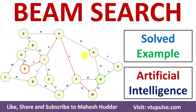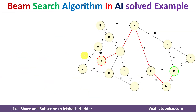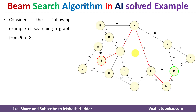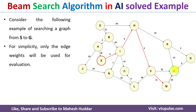Welcome back. In this video I will discuss how to use the beam search algorithm in artificial intelligence to find an optimal path from the initial node to the goal node with a simple solved example. We have been given a graph where S is the initial state and G is the goal state. For simplicity, only edge weights are used for evaluating each node, that is f(n) = g(n). Sometimes f(n) = h(n), using heuristic values, or f(n) = g(n) + h(n). In this case we are using only g(n), that is the edge weights.